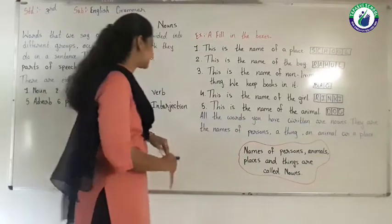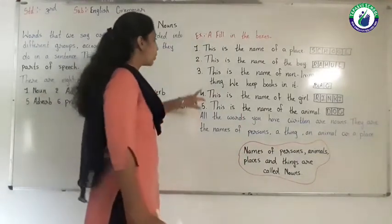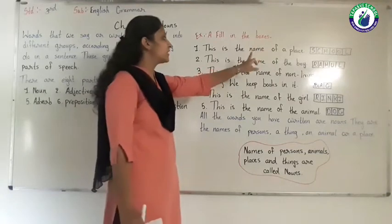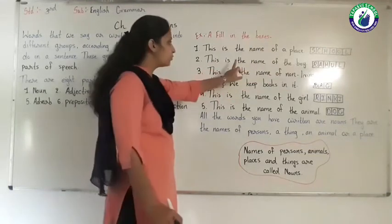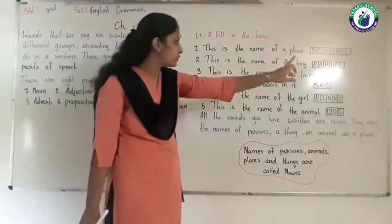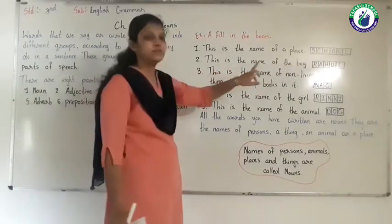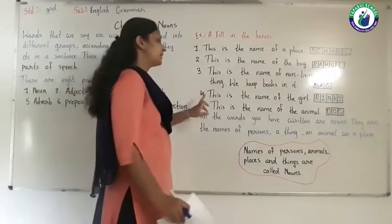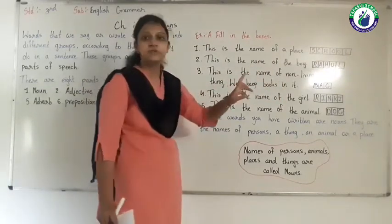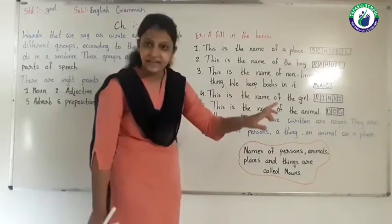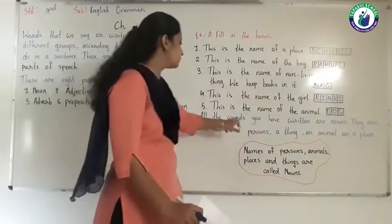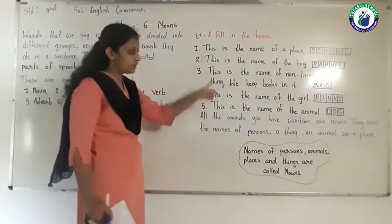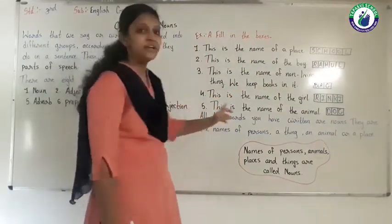Now let's see from the exercises. School — school is the name of a place. Rahul is the name of the boy. Bag is the name of a thing. Rinki is the name of a girl. Dog is the name of an animal. All the words you have written are nouns.